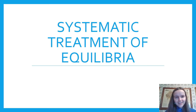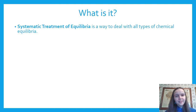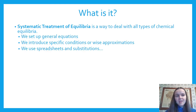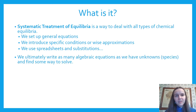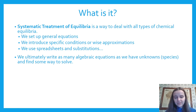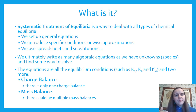What is systematic treatment of equilibrium? It's a way to deal with every type of chemical equilibrium. We set up general equations, apply conditions or approximations, then use spreadsheets and substitutions to solve the complex math. The key idea: you need the same number of equations as you have unknowns. If you have four unknowns, you need four equations. The unknowns are the concentrations of every chemical species you're interested in. We get equations from equilibrium constants like Ksp, Ka, and Kw, plus two more: charge balance and mass balance.